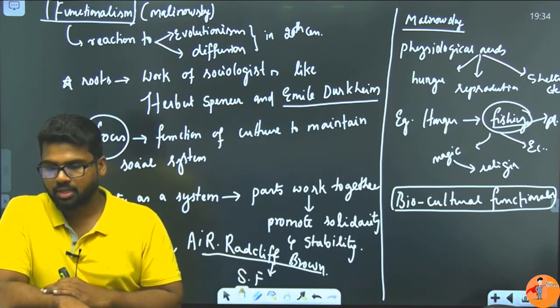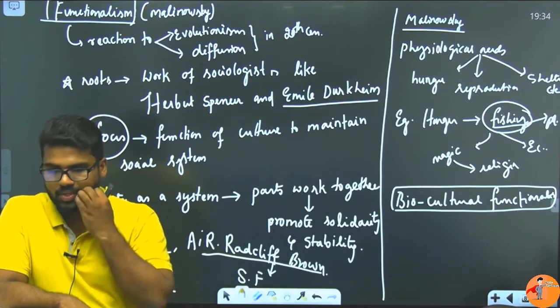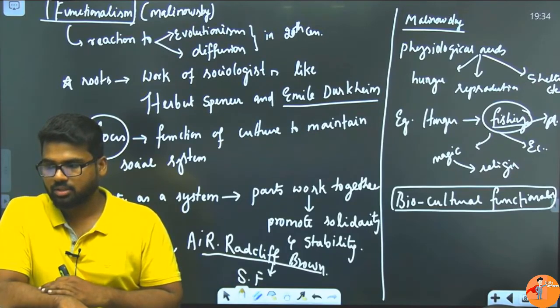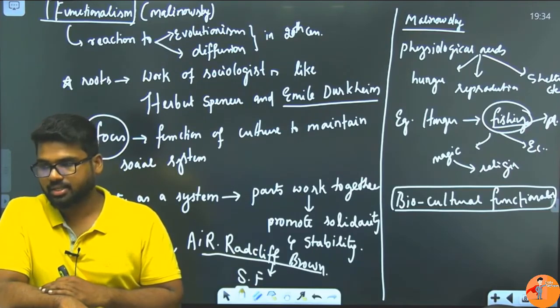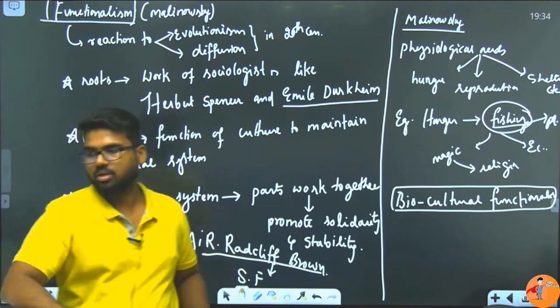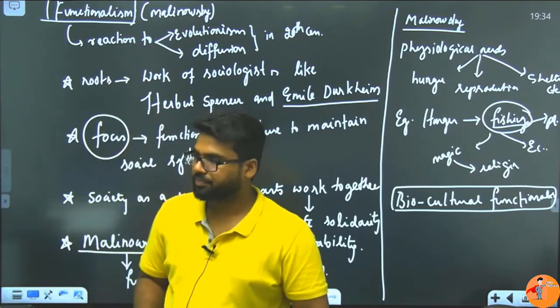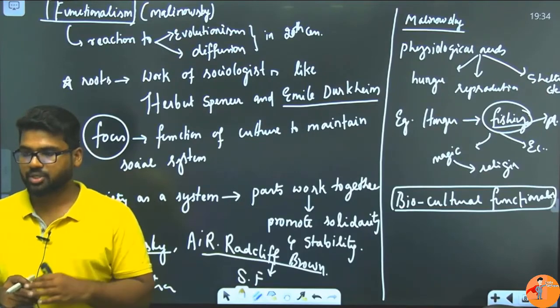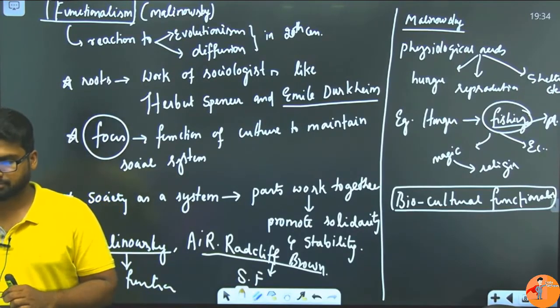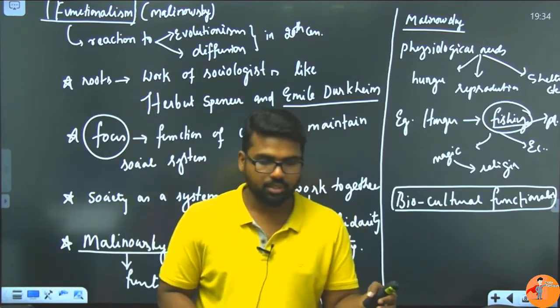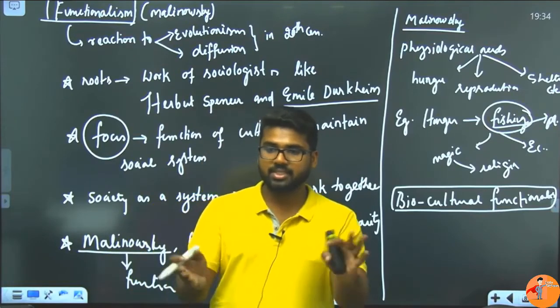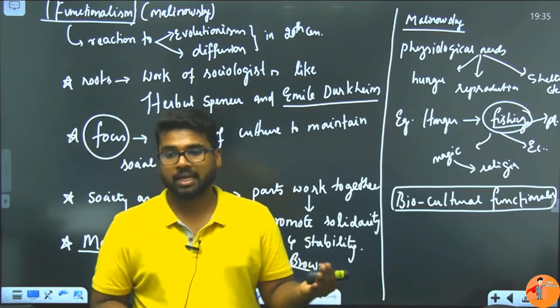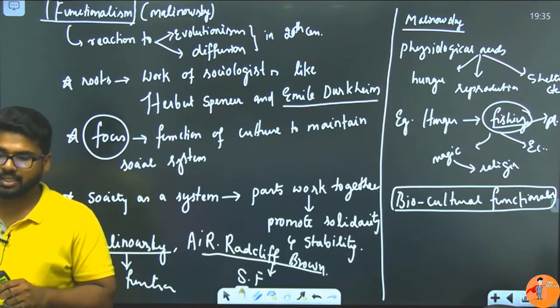Next point. Functionalism neglected the inequalities like gender, income, class, race, caste, etc., which became main agents of conflict and tension. These are dysfunctions of culture, but that is happening because of these elements, which is a dysfunction. But he did not talk about them.